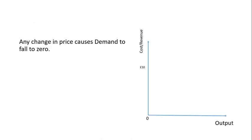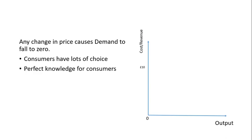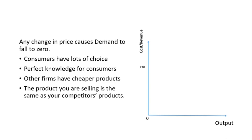Because our products are completely the same as any competitor's products, any change in price causes demand to fall to zero. Consumers have a lot of choice and perfect knowledge, so if competitors have cheaper products and your product is identical, you will lose all your demand. So what does that demand curve look like? It's a very elastic curve — perfectly elastic. If you lose all your demand by changing your price, that's a perfectly elastic curve, which is a straight horizontal line. Remember, it looks like an E: that line across is the middle of the E, the perfectly elastic demand curve.